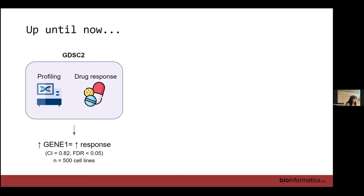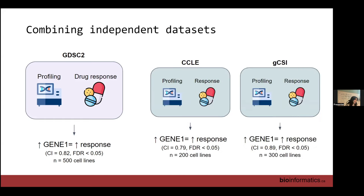That was something about validation — the need to find it in other studies. So we find an association in one P-set, say GDSC, and we want to see if we see the same effect in CCLE and GCSI — two other P-sets in our dataset. That's what we mean when we say meta-analysis.